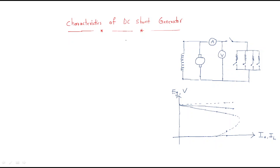We will discuss the characteristics of the DC shunt generator. Among the many types of DC generators, the DC shunt generator consists of an armature (A and A terminals) and a field (F and F terminals), with both the armature and field connected in a shunt, or parallel, manner — that is why it is called a shunt generator. To understand the characteristics, we connect an ammeter in series with the load.